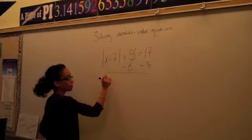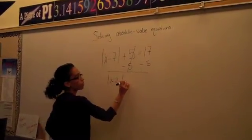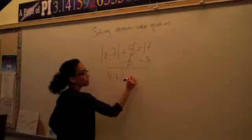That cancels out, and we bring down the whole absolute value equals 17 minus 5 is 12.